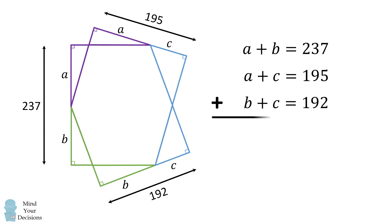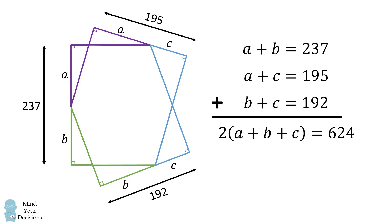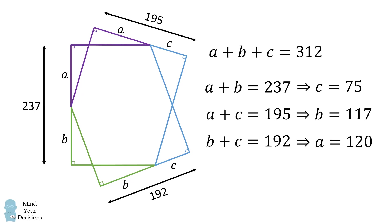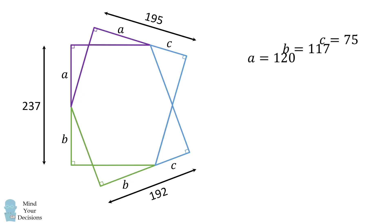One way to do that is to take the sum of these three equations. We get 2 multiplied by the sum of a, b, and c equals 624. We divide by 2 to get the sum of a, b, and c. From here, we subtract the first equation to get c equals 75, subtract the second equation to get b equals 117, and subtract the third equation to get a equals 120. Thus we have values for a, b, and c.